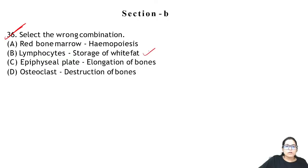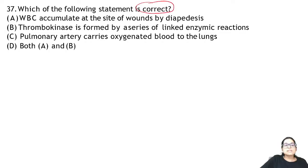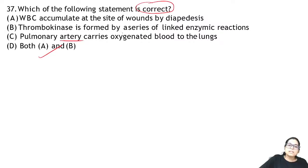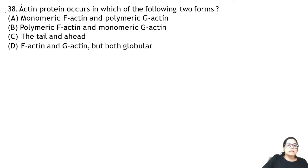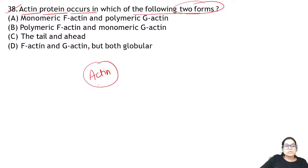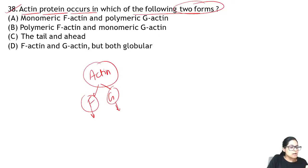Question 37: which is correct? Both A and B are correct. The pulmonary artery carries deoxygenated blood. Question 38: actin protein occurs in which two forms? Actin exists as F-actin (polymeric) and G-actin (monomeric). So the answer for 38 is B.